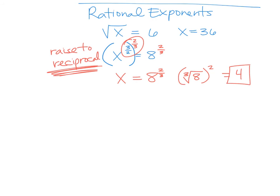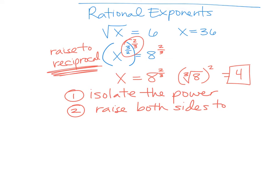So your two steps in this one, step one, you're going to isolate the power. Still isolating first. And then step two is we're going to raise both sides to the reciprocal power. Still a two-step process. We have three of these and then we are done.